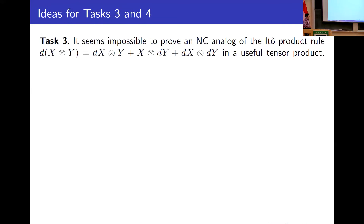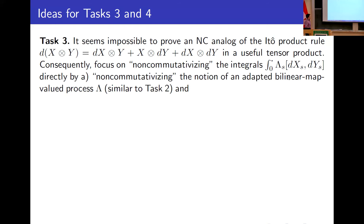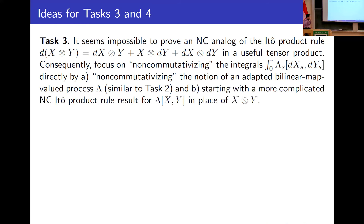For task three — constructing quadratic co-variation integrals in a non-commutative setting — for fairly deep reasons it seems not possible to construct an analog of the tensor product identity in a useful tensor product; tensor products in which this can be constructed are not useful for Itô's formula. As a result, we focus on non-commutativizing quadratic variation integrals directly: first by adapting (pun intended) the notion of an adapted bilinear-map-valued process, similar to how we handled the linear-map case; and second, starting with a more complicated Itô product rule for λ(X,Y) in place of X⊗Y.